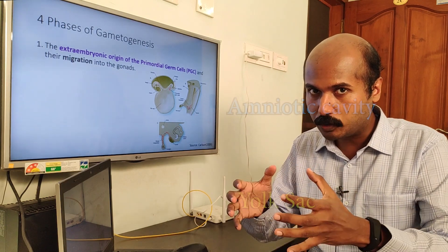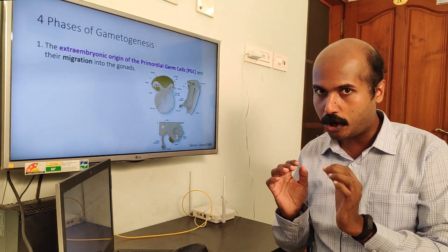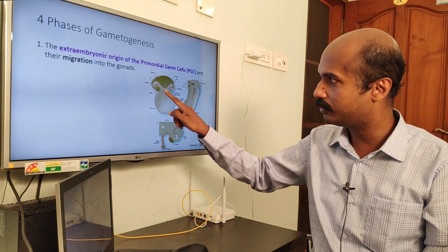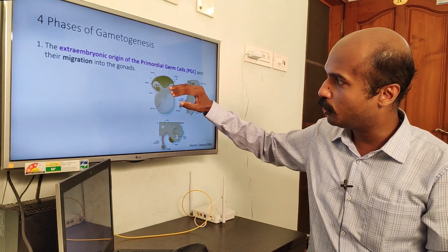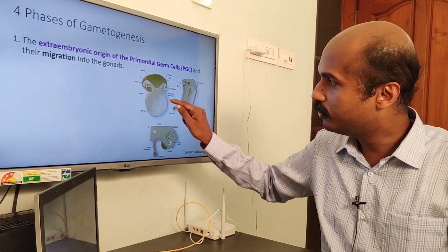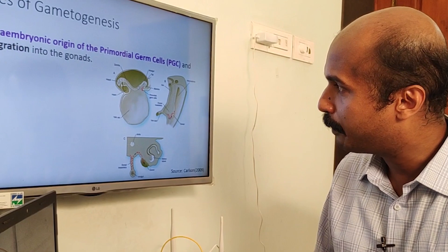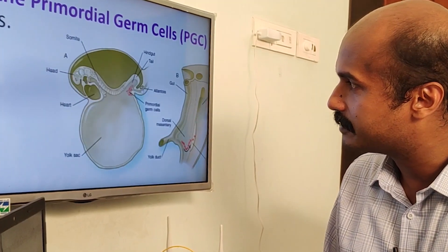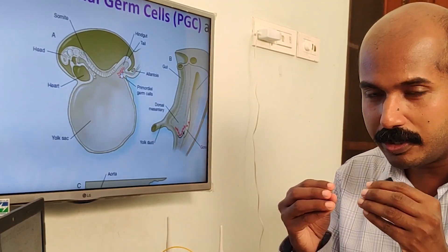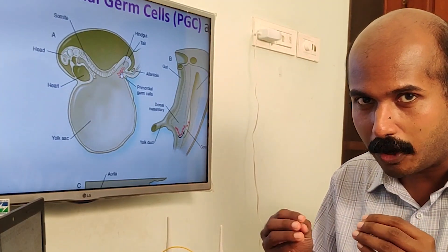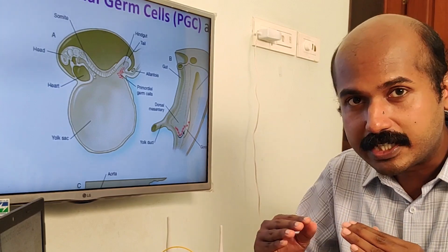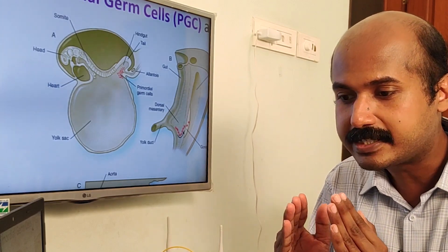On the caudal aspect of the dorsal wall of the yolk sac, you can see the formation of primordial germ cells, shown here as red dots. Those primordial germ cells will slowly migrate along the wall of the hindgut.